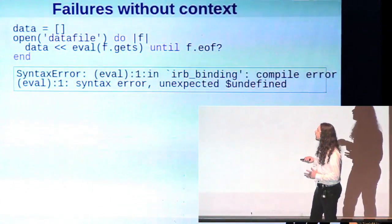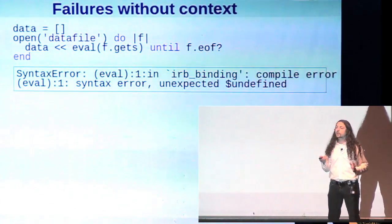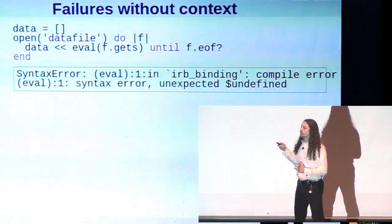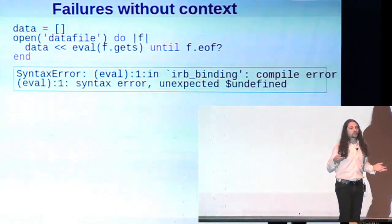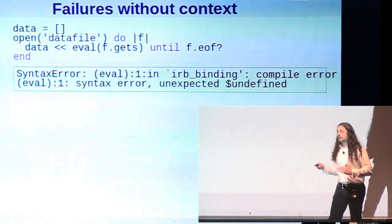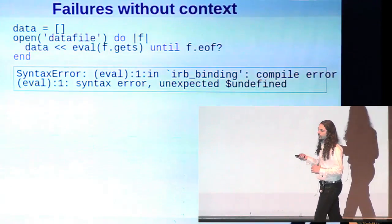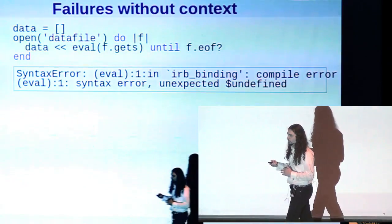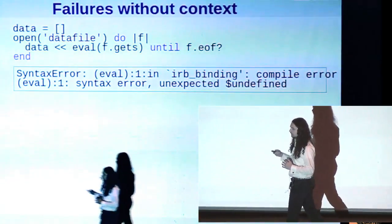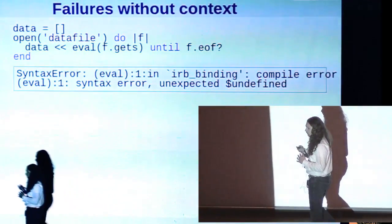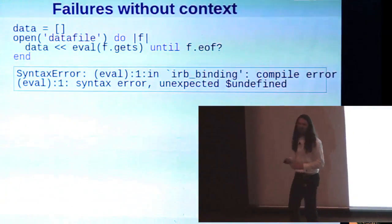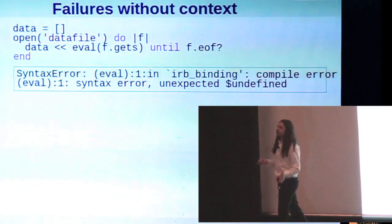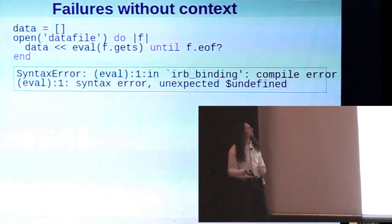Ruby lets us re-raise exceptions if we decide that we can't handle them. But something that's used less often is the ability to modify the exception. Here's a case where we are loading some data up. We're going through a file line by line and we're parsing some data out of it and putting the data in an array. If that fails somewhere along the line, we get this completely inscrutable exception that if the user sees that, they're like, what? Compile error? What's that about? Where did that come from? Even if they know it was coming from a file, where in the file did it come from?